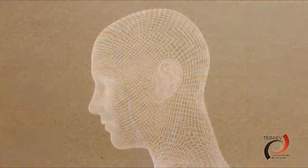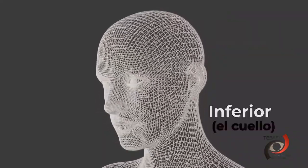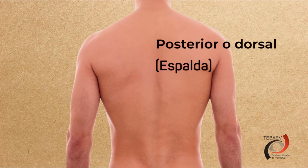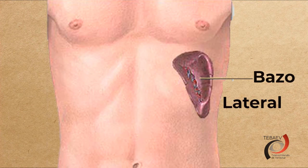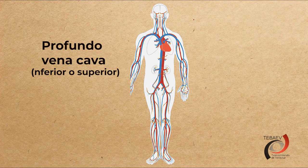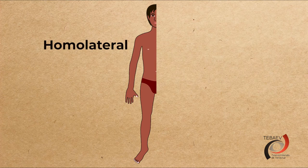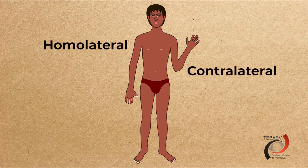De esta forma tenemos los términos direccionales básicos: superior, inferior, anterior o ventral, posterior o dorsal, medial, lateral, superficial y profundo. Además, podemos incluir los términos homolateral, para referirnos a dos órganos o estructuras en el mismo lado del cuerpo, y contralateral, para indicar que una estructura se encuentra en un lado opuesto a otra.